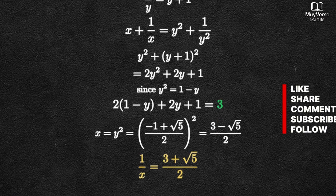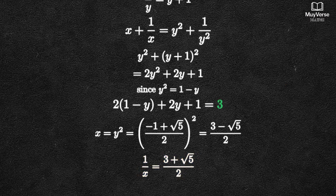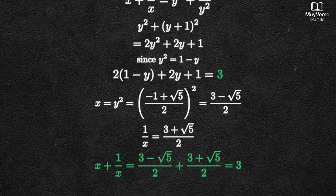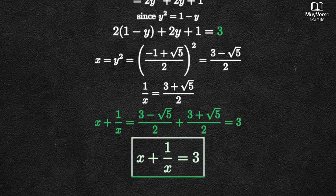Therefore, 1 over x equals 3 plus square root of 5 over 2. Adding them gives 3, confirming our result. Therefore, the final answer is 3.